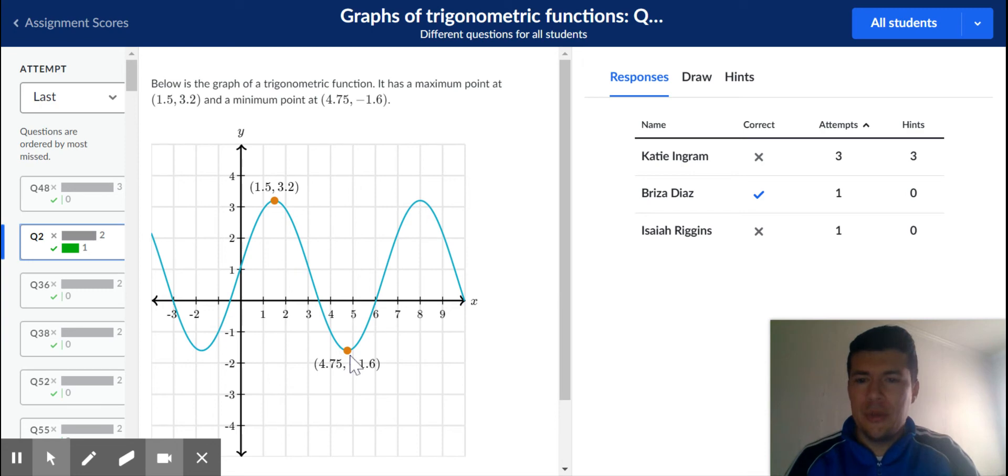So 1.5 to 4.5 is 3 units, 3.25 units apart. So you have to think, how much of the period is this? So you went from a maximum to the midline and then to a minimum. That is 2 out of 4 parts of the period.